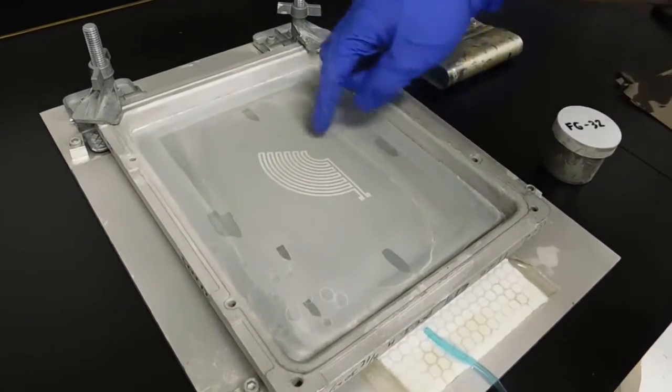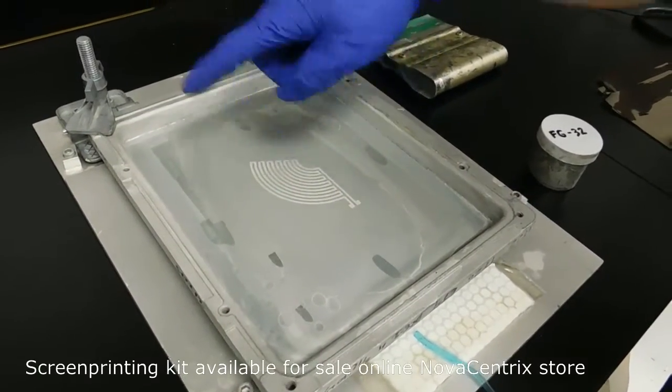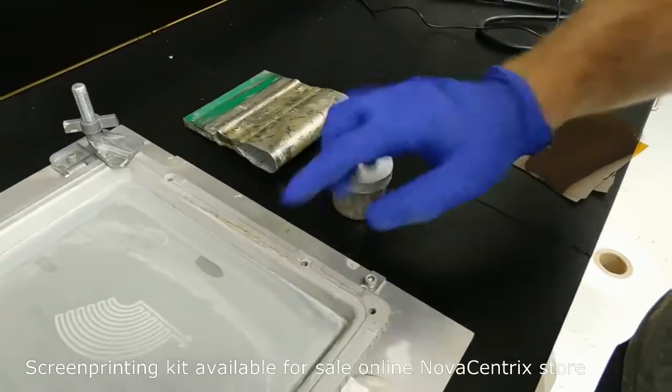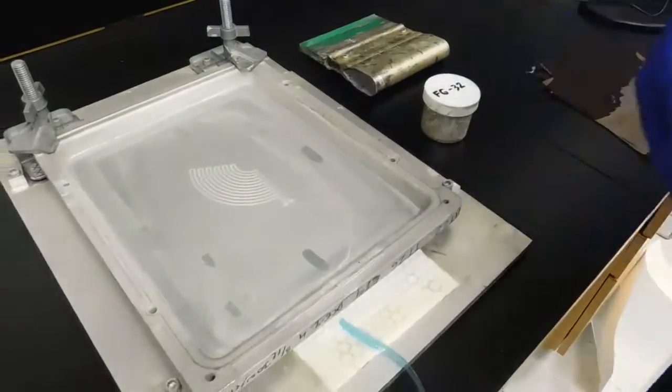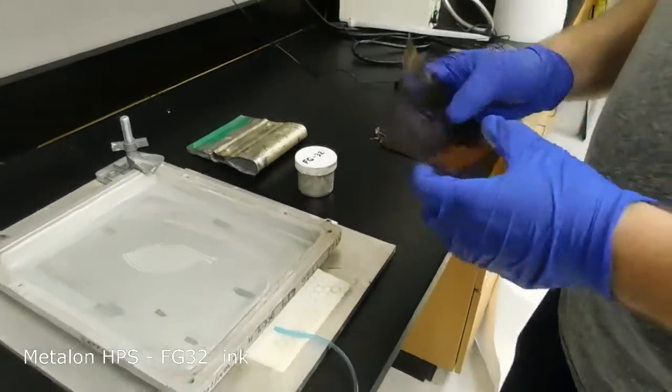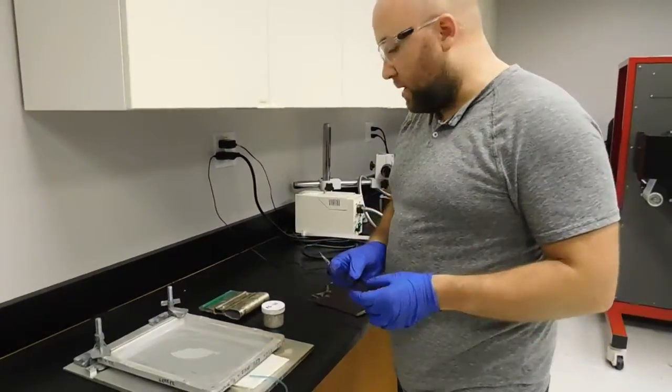It's a pretty simple heater element, it's just kind of a path going back and forth. And then what I'm going to do is I'm going to screen print FG32 silver ink onto the Kapton, and then we're going to cover drying it and curing it and everything later in the video.